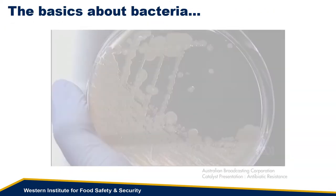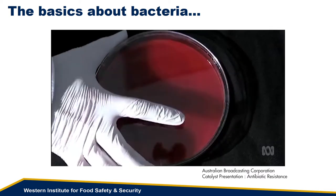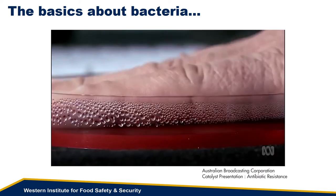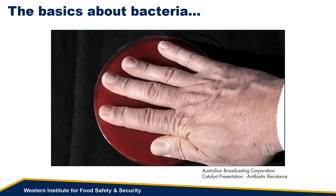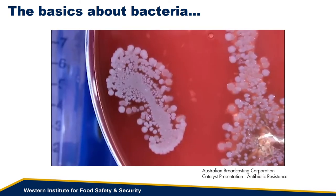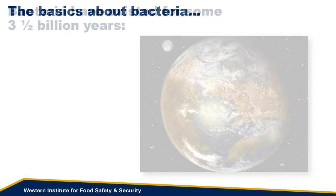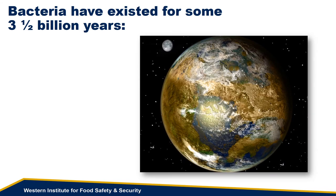Some background on bacteria is also helpful. It's useful to remember that bacteria are all around us, on the tools we use and in the food we eat. We actually may have as many normal, protective bacteria on our skin and in our GI tract as we have human cells. And bacteria have been around a lot longer than we have. Bacterial fossils, found in Northwest Australia, are some 3.5 billion years old, formed just 1 billion years after the Earth was created.